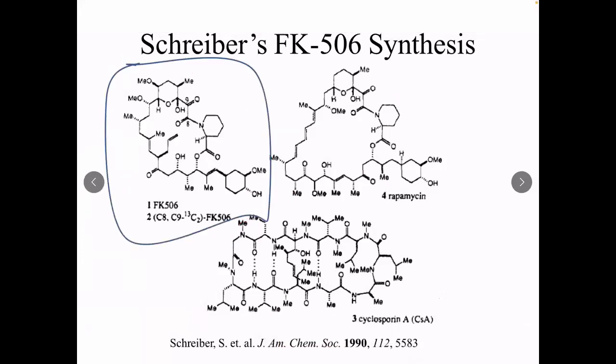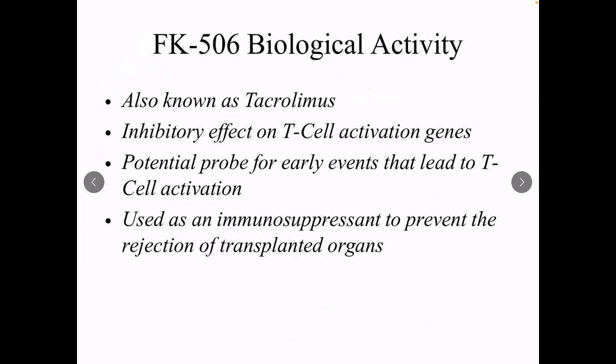FK-506 is in a family of compounds like rapamycin and cyclosporine. In the late 80s and early 90s it became a big thing because of its biological activity. You can see it's what we call a macrocycle — a huge cyclic molecule with a lot of stereocenters. It has an inhibitory effect on T-cell activation, so it's kind of a probe for early events leading to T-cell activation, and it's used as an immunosuppressant for organ transplants and things like that. It's a very important molecule.